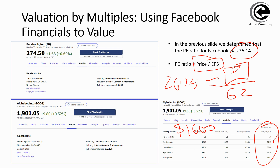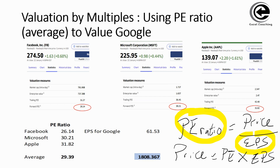We are using the earnings guidance for Google and saying that because it has a very similar risk profile to Facebook, let's use the Facebook PE ratio. This is how we arrive at a price of $1,600. However, we used only one company's PE ratio here. To make this more sophisticated, instead of using the PE ratio for just one company, we can use a few companies to come up with an average for the industry, which is a more robust measure.